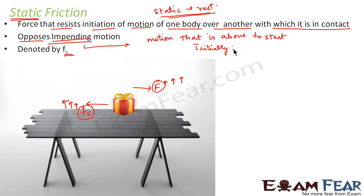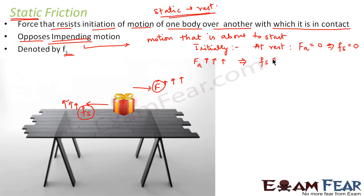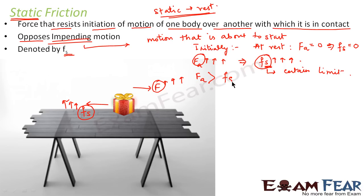Now we will see it in detail. Initially the box is at rest: the applied force is zero and the static frictional force is also zero. As we start increasing the applied force, the static frictional force also keeps increasing. But this frictional force can increase only up to a certain limit. When it reaches its maximum value — Fs maximum — the applied force becomes greater than that maximum value. Since the applied force becomes greater than Fs maximum, the body starts to move.